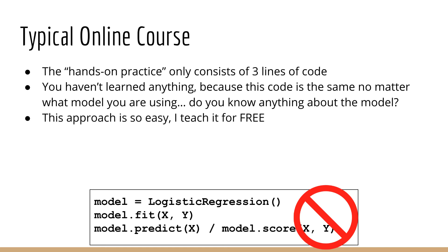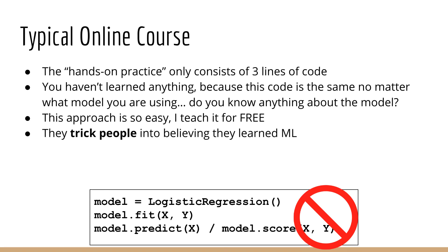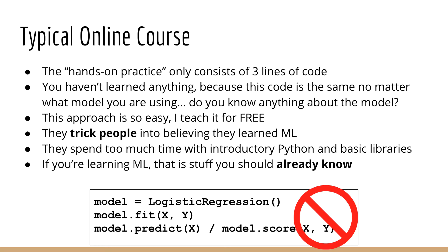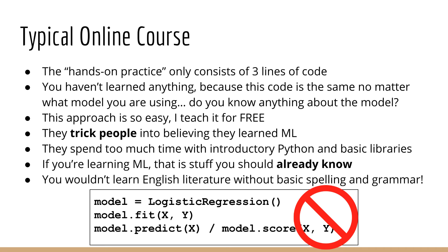This approach is so easy I just teach it for free. If you want to learn this kind of thing, just take my free course or spend an evening reading the scikit-learn documentation. You do not need a course to learn this. The sad part about these courses is that they trick people into believing that they have learned machine learning. Most of these courses spend too much time teaching introductory Python, like for loops and if statements, then go on to teach basic Python libraries like NumPy and Matplotlib. That stuff has nothing to do with machine learning — it's stuff you should already know. Taking these courses is like taking a course on English literature and then learning basic spelling and grammar.